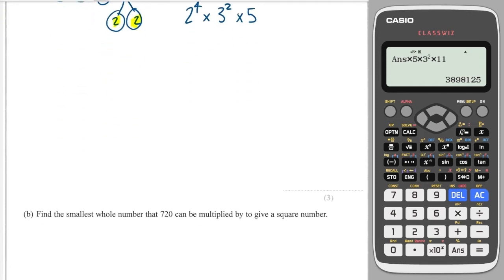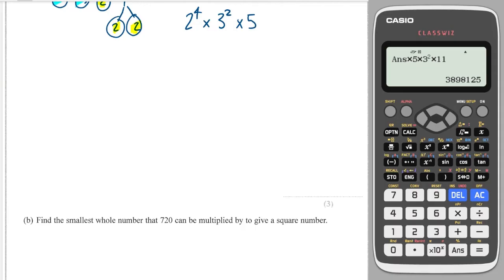Now here comes the tricky part of the question. Find the smallest whole number that 720 can be multiplied to give a square number. So a square number must have even powers. At the moment those two are even, but 1 is not even. So if I multiply this by 5, then that will give me 2 to the 4 times 3 squared times 5 squared. And this is a square number.